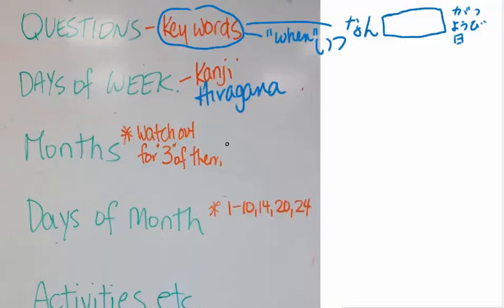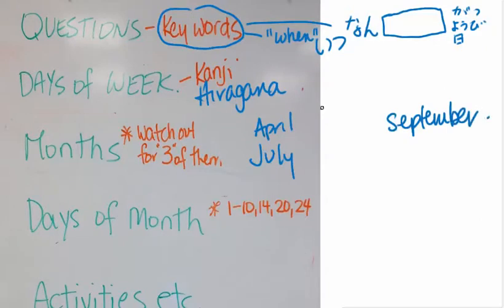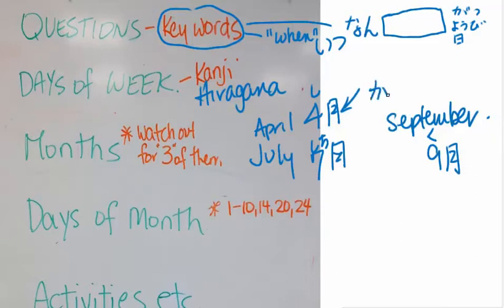In the months, you will be asked to write the words for months. There are three of them you have to watch out for. And they are April, July, and September. April is the yon here, but it's said shi. July is shi-chi gatsu. And September, we like to ask because it's just the ku with the gatsu. And remember that the word for month is said gatsu. I hear gatsu a lot, but it is gatsu.